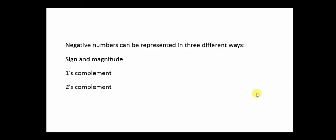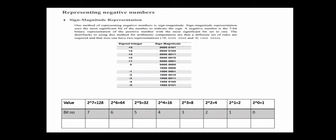In this video we will look at negative number representation. There are three types: sign magnitude, one's complement, and two's complement. We will cover sign magnitude and one's complement in this video — specifically, how we represent negative numbers using sign magnitude.